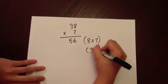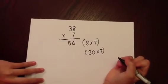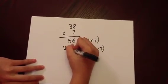Moving on to the tens column. 30 times by 7. 30 times by 7 is 210.